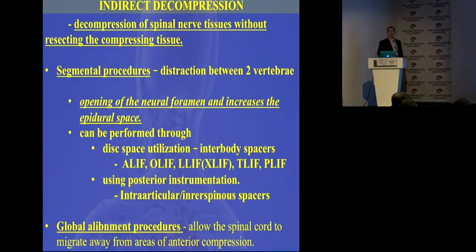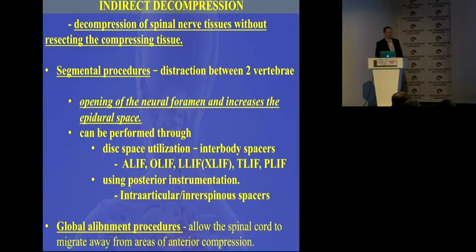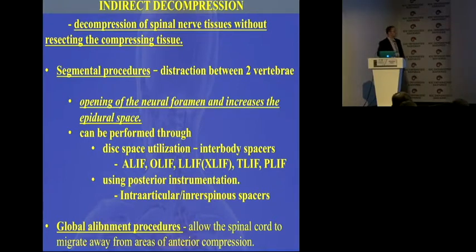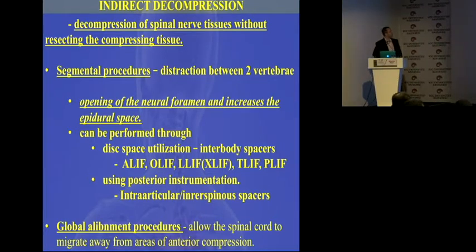Let's focus on indirect decompression. We have two major groups of options: segmental procedures and global alignment procedures. If we restore the alignment of the spine, we generate volume in the foramina — but that's not the scope of this lecture. For segmental procedures, the basic concept is distraction between two vertebrae. We can utilize opening of the neural foramen and increase of the epidural space by disc space utilization using interbody spacers, or we can use posterior instrumentation in terms of interarticular and interspinous spacers.